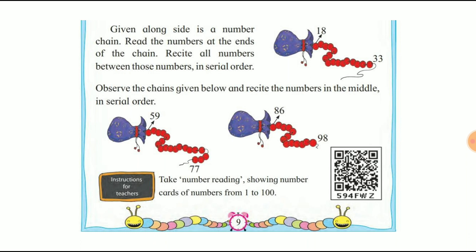You understand — students, आपको serial order में बार बार read करना है और back counting का भी practice करना है। So read and write the numbers 1 to 100 in the notebook, then write back counting 100 to 1, and lastly write in serial order: 18 to 33, 59 to 77, 86 to 98. Okay, thank you.